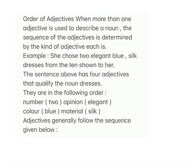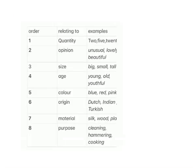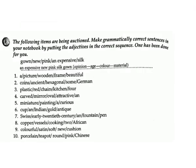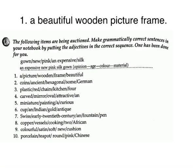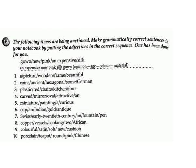Adjectives generally follow a set sequence. The following items are being auctioned — make grammatically correct sentences by putting the adjectives in the correct order. Example: 'gown — new, pink, an expensive, silk.' Answer: an expensive new pink silk gown. Opinion, age, color, material. 1. 'a picture — wooden frame, beautiful.' Answer: a beautiful wooden picture frame.